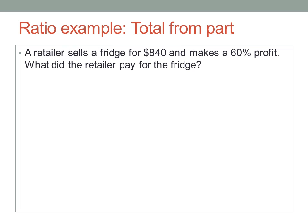What did the retailer pay for the fridge? The original price was 100%. Do I have the original price? No, I have a later price — the price the retailer sold it for. The original price is the amount the retailer paid for it, which is what I have to find out. So I can't just get 60% of $840 and take that off.